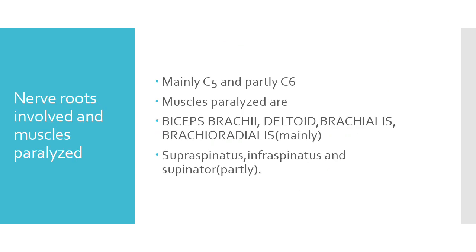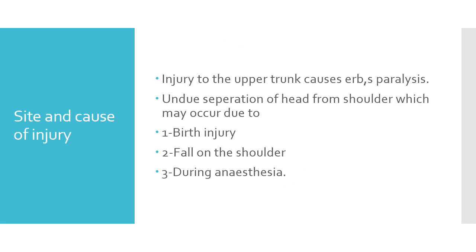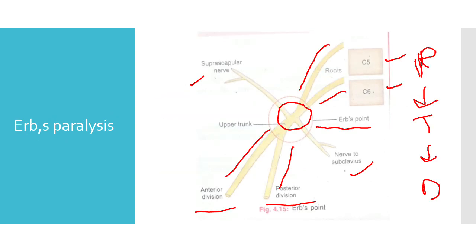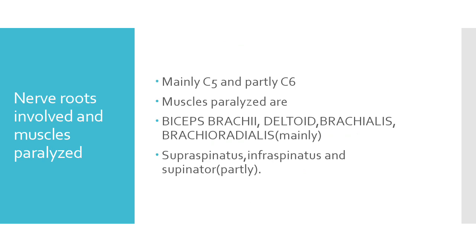Now let's see which nerve roots are involved. The nerve roots involved are C5 and C6. Mainly C5 is involved, and partially C6 root of the brachial plexus is affected.